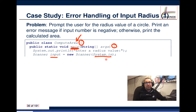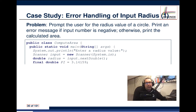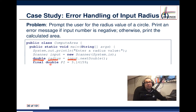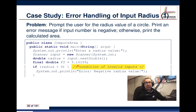We use that Scanner object input and call the nextDouble() method to read the radius value from the user. We have a variable called radius of type double — double precision floating point — and we also have a constant called pi. We'll use those to figure out the area, but first we're going to check whether the input was valid.